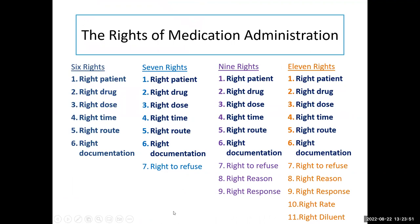The rights of medication administration — different textbooks list different numbers. Potter will tell you a certain number; Lily in one chapter says five or six, another chapter says 11. It all depends on the situation and the drugs you're giving. But there are always the basic six rights, and the six rights you never ever change or go without are: the right patient, the right drug, the right dose, the right time, the right route, and the right documentation.